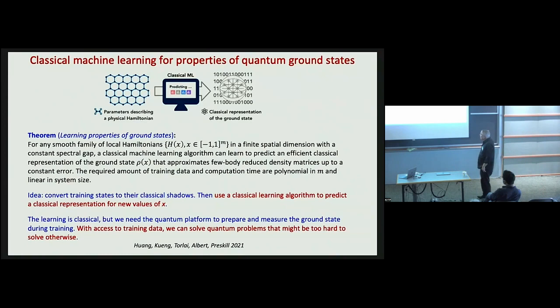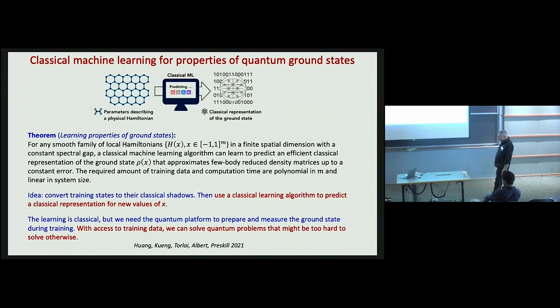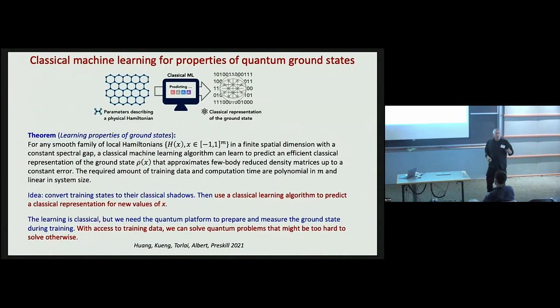The learning is entirely classical. We make use of our quantum platform to prepare the quantum states of interest and convert them to classical shadows, then we use a classical machine learning method to generalize. At least for local Hamiltonians, we can show that generalization is reliable — and in some cases we can solve quantum problems that would be too hard to solve if we didn't have access to any data.